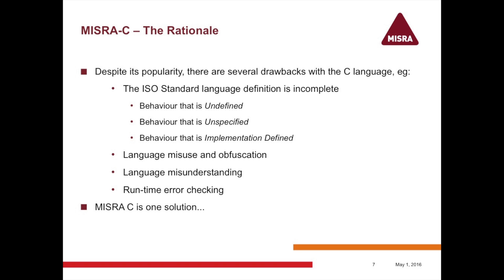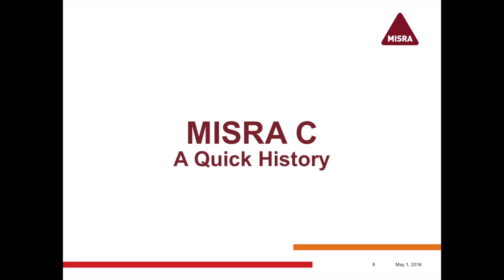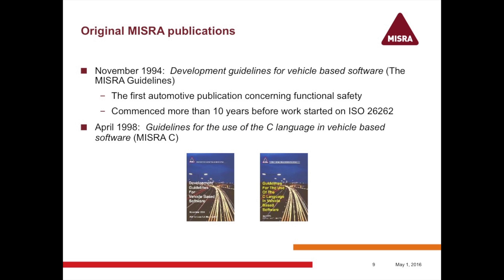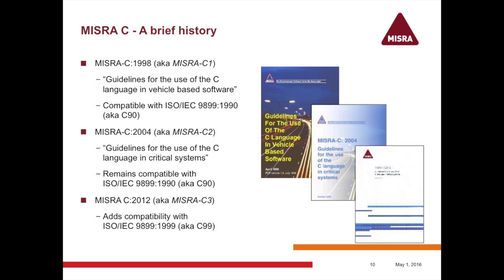With C you can do some fairly silly things legally, and there are areas where people misunderstand the language. MISRA C is one solution to this. In 1994 a consortium mostly from the automotive industry was put together with a small amount of government funding and produced a document called 'Development Guidelines for Vehicle-Based Software' — the MISRA guidelines. These are recommended reading even 20-odd years on, predating ISO 26262 and similar standards. Then in 1998 the first MISRA C guidelines were produced, and in 2004 came a second edition — a paradigm shift, expanding from automotive into guidelines for the use of C language in critical systems generally.